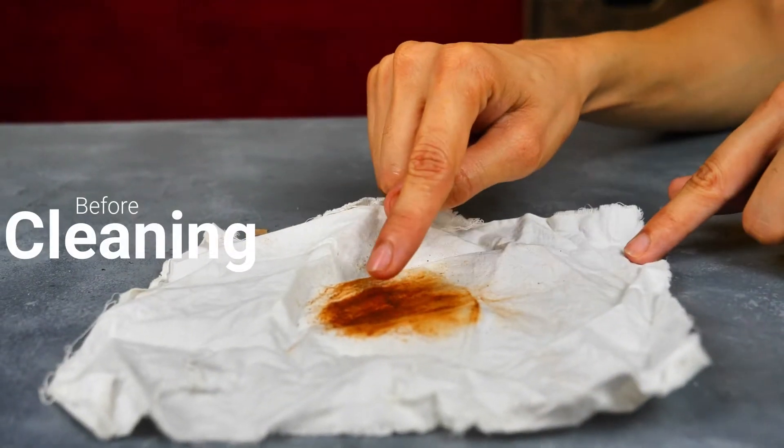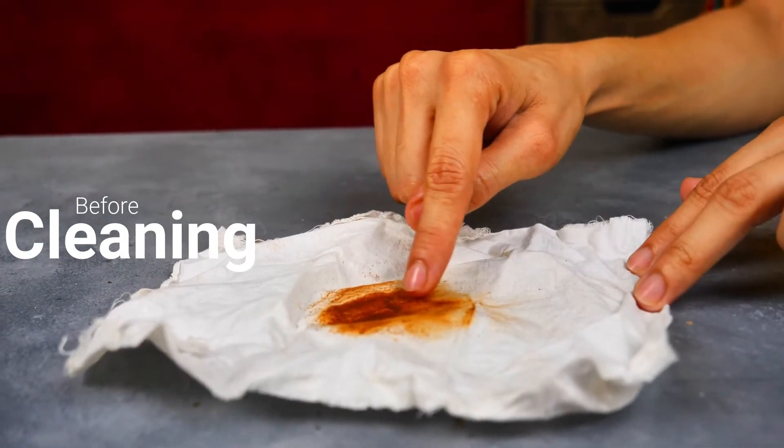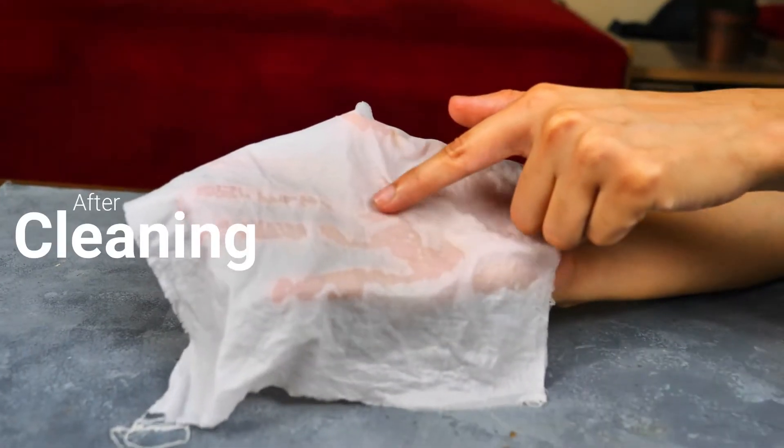For chocolate stains on delicate fabrics, you might go for dry cleaning right away. Use a mixture of dry cleaning solvent and mineral oil. You can try this method to get rid of that chocolate stain on your clothes.